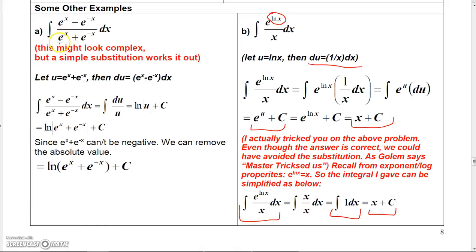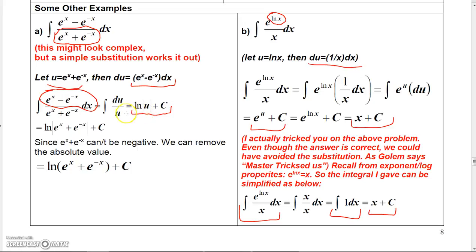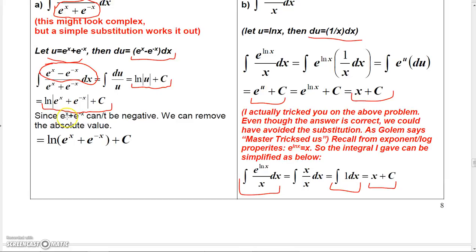Let's finish with one more du over u type problem. This might look complicated, but the denominator is not raised to a power other than 1. If u equals e to the x plus e to the minus x, then du is e to the x minus e to the minus x dx. The numerator e to the x minus e to the minus x dx is du, and the denominator is u, so we're integrating du over u. That gives the natural log of the absolute value of u plus a constant, and replacing u gives the natural log of the absolute value of e to the x plus e to the negative x plus a constant. Since e to the x plus e to the negative x can't be negative, you can remove the absolute value signs.